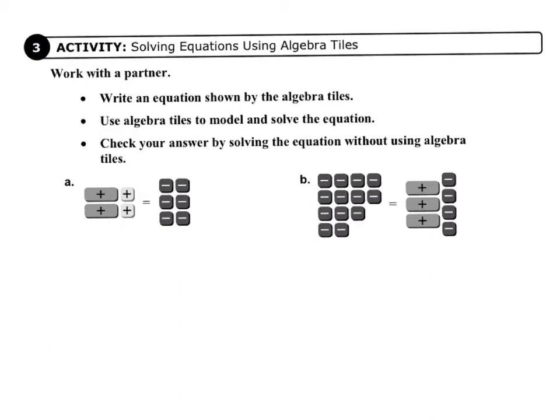So here we go. So letter A, if we look at the equation, we have 2 variables, so we'll call that 2x. And we have 2 pluses, so that's plus 2 equals, we have 6 minuses, so that's negative 6.